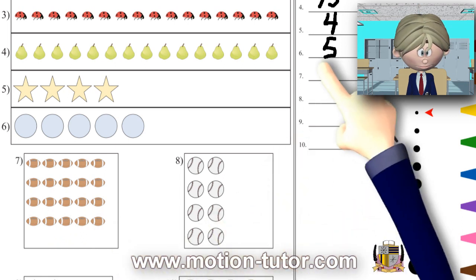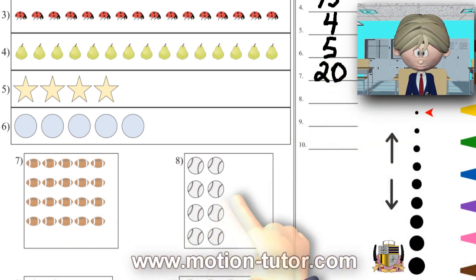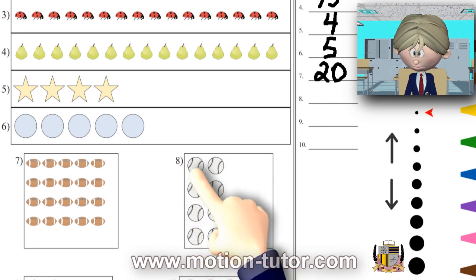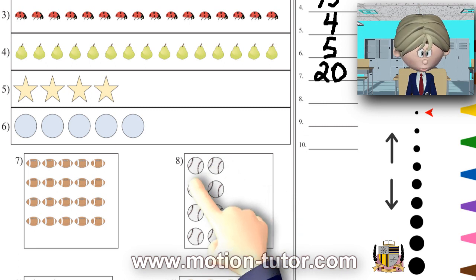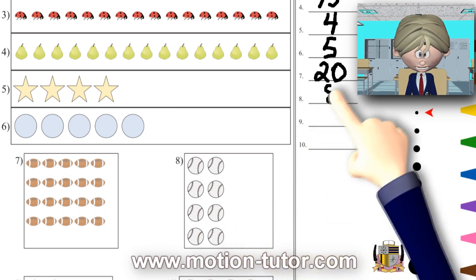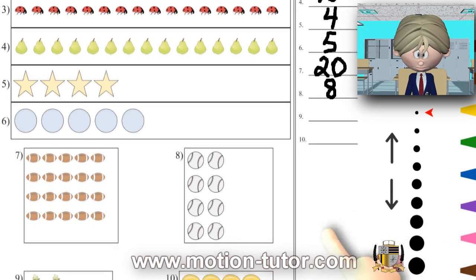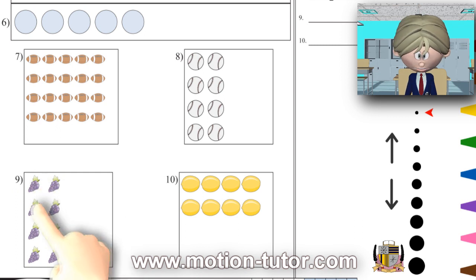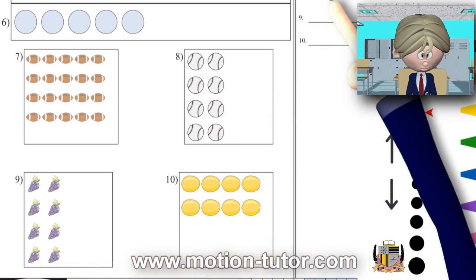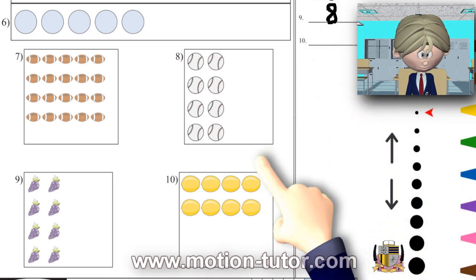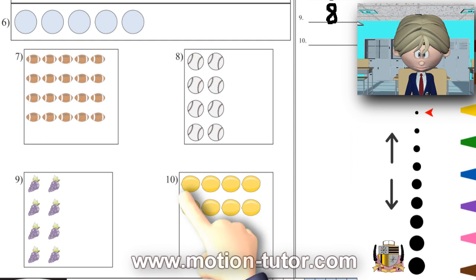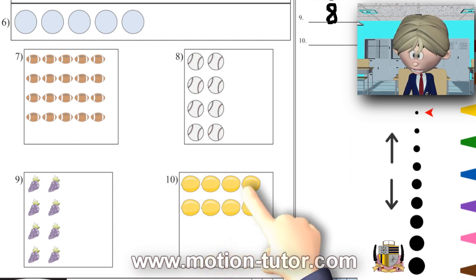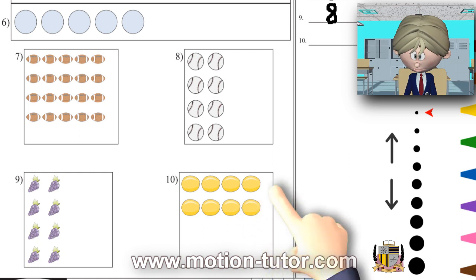One, two, three, four, five, six, seven, eight. Eight baseballs. These grapes: one, two, three, four, five, six, seven, eight. We have eight.